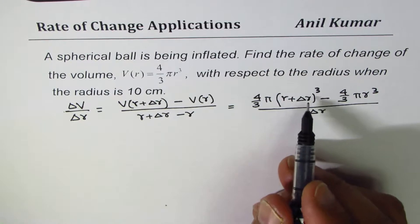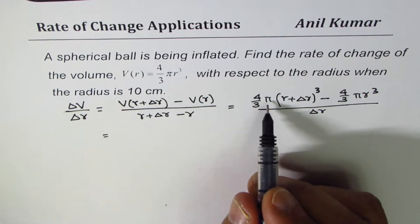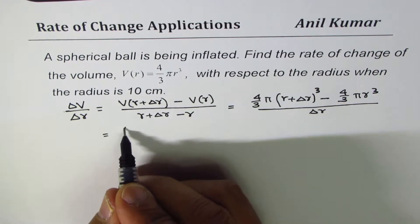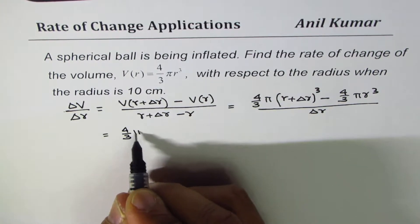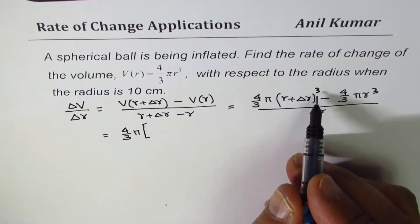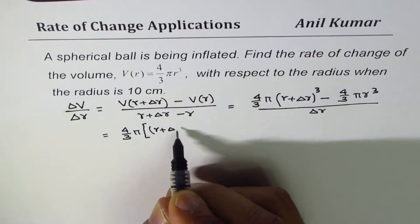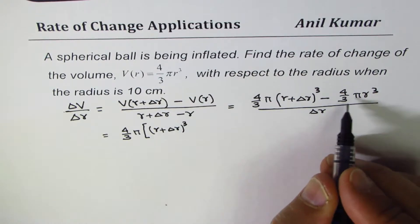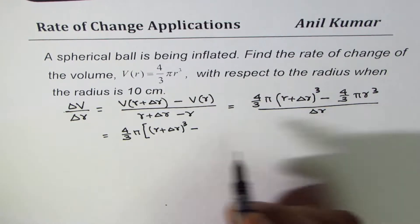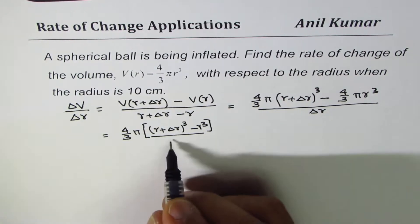Now let us expand the cubic expression. We can take 4/3 π common, and we are left with (R + ΔR)³ minus R³ divided by ΔR.